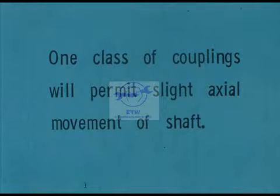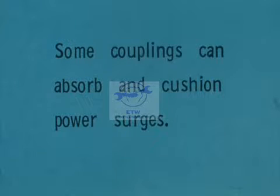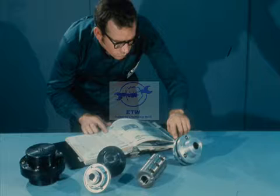Certain couplings are designed to permit a small amount of axial movement of the shaft during operation. There are also special couplings that are designed to absorb and cushion power surges between the driver and the driven equipment. These advantages and disadvantages of certain types of couplings are taken into account when selecting a coupling for a specific application.